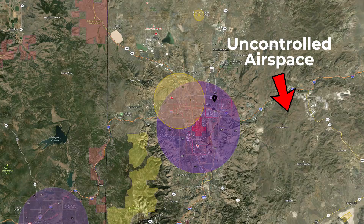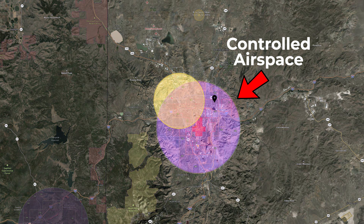Before you fly your drone, you need to check the airspace you're in. If it's class G or uncontrolled airspace, you're good to go. But if it's class B, C, D, or E airspace — aka controlled airspace — you need authorization to fly in it.